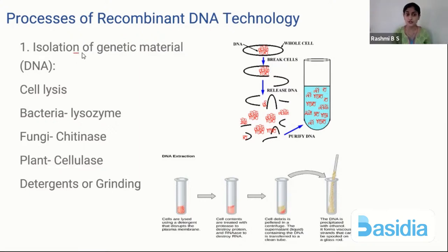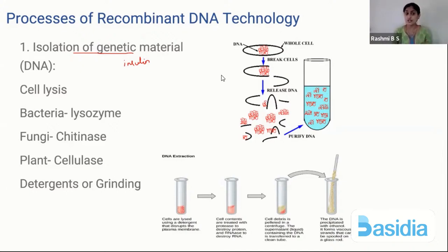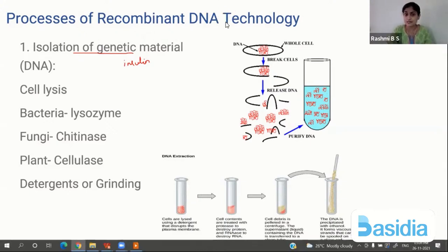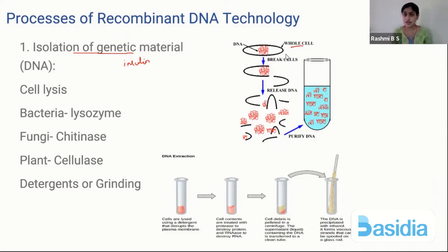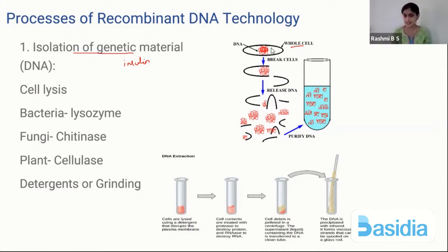Taking insulin as an example, to make insulin we need to first isolate the gene of interest from some big DNA. I have a big DNA inside a cell, and from that cell I need to take my gene of interest. Look at this diagram — you have a whole cell with a large amount of DNA inside. From that, you are supposed to isolate your desired gene. First, forget isolating the desired gene — we need to take the entire DNA out of the cell.